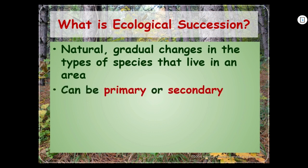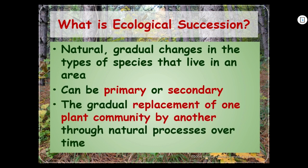Succession can be primary or secondary. Primary just means first, secondary means second. The gradual replacement of one plant community by another through natural processes over time. We're going to take a look at how you go from a barren landscape of just abiotic, non-living things into biotic, living things.